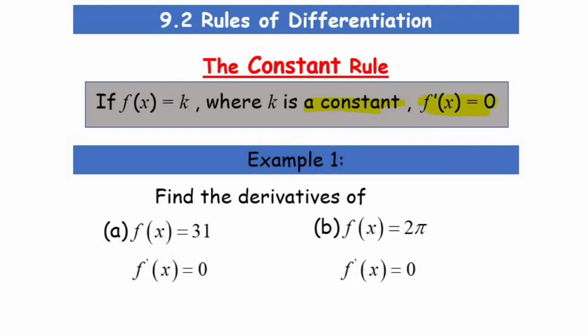That is the rule for differentiating a constant — it equals 0. Let's look at an example: find the derivative of f(x) = 31. Since 31 is a constant, differentiating it gives 0. Similarly, 2π is also a constant, so f'(x) equals 0.